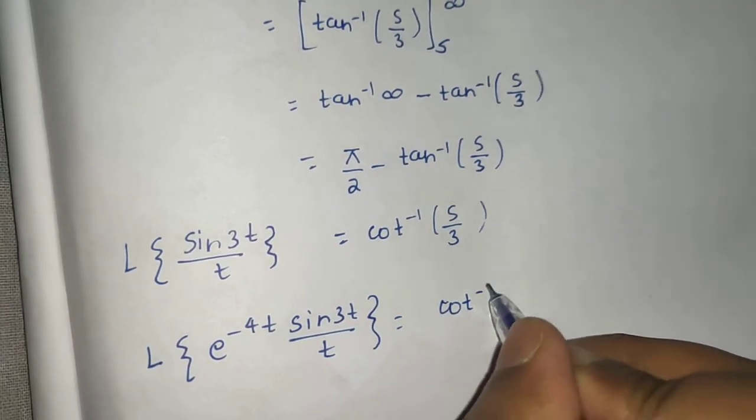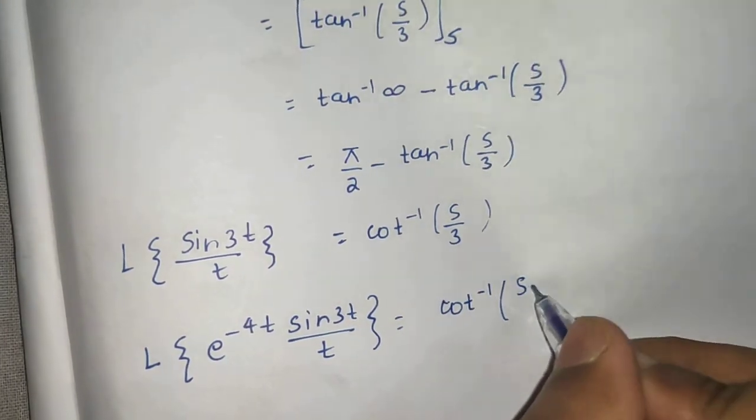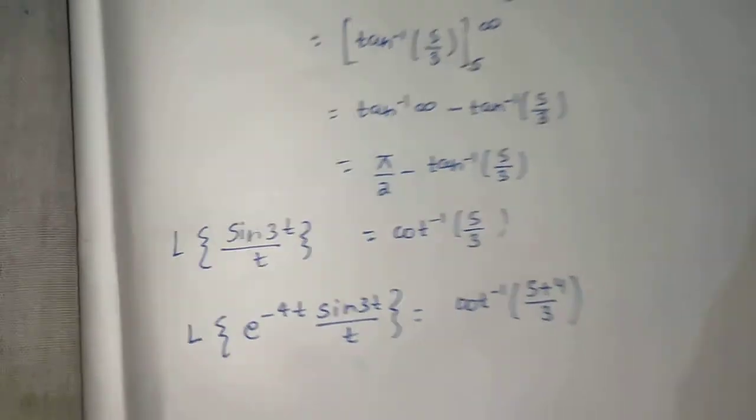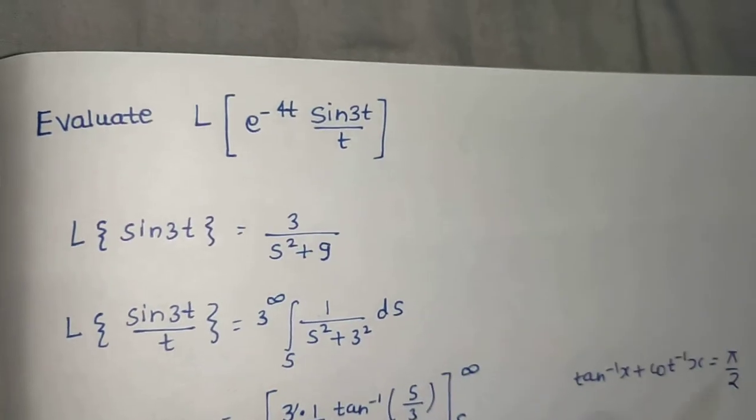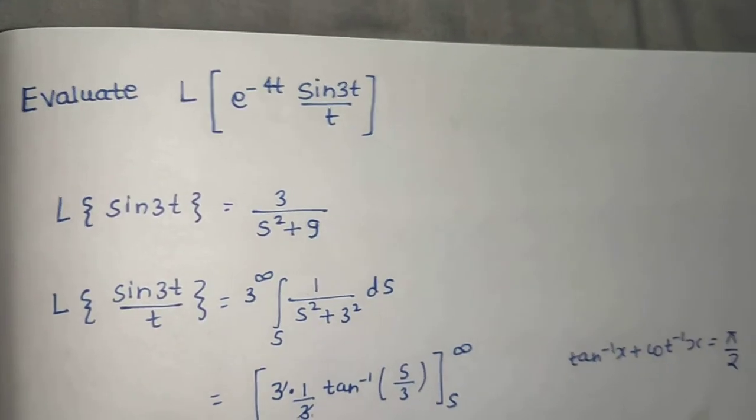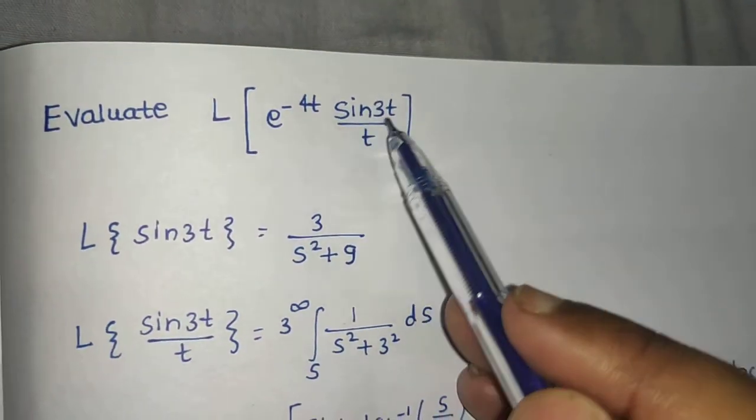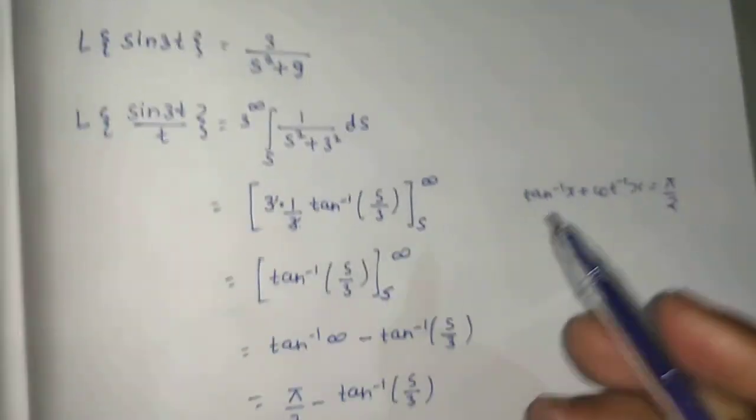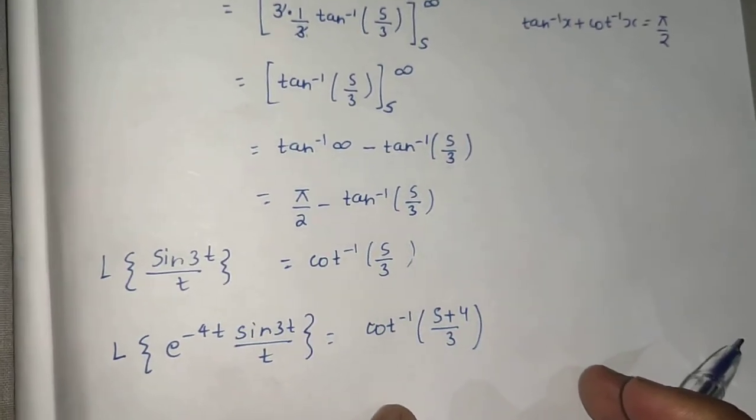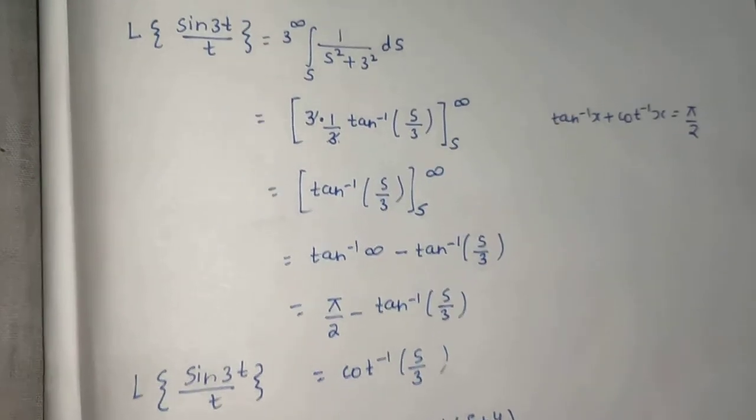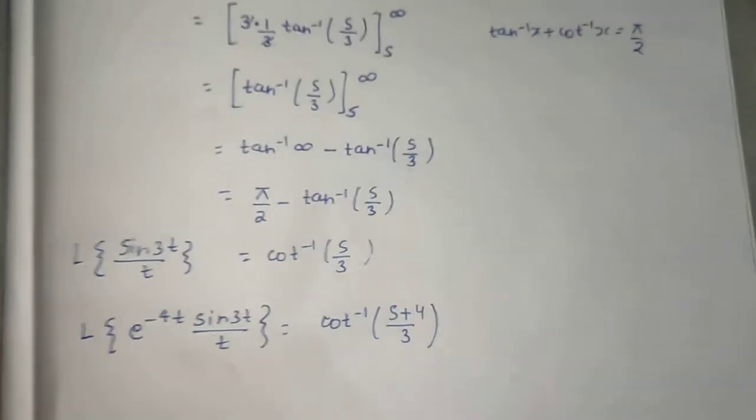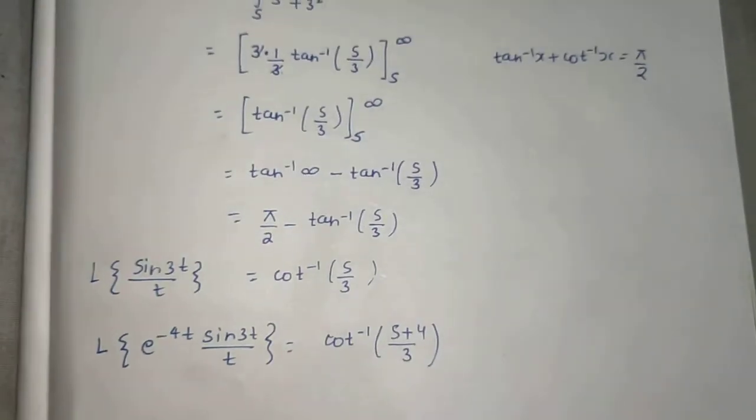So you will get cot inverse s plus 4 divided by 3 as your final answer. So again, this problem can be easily broken into three parts: first finding Laplace of sine 3t, then division by t property, and then finally the first shift theorem to get our things done. So I hope you understood this problem. Let's meet you with some more Laplace transform problems.